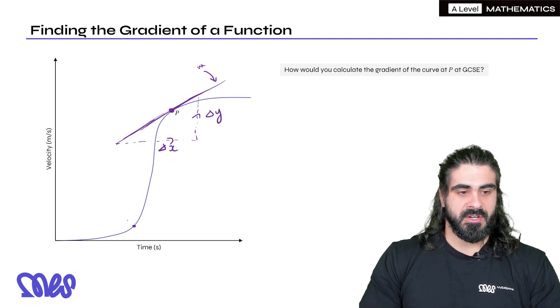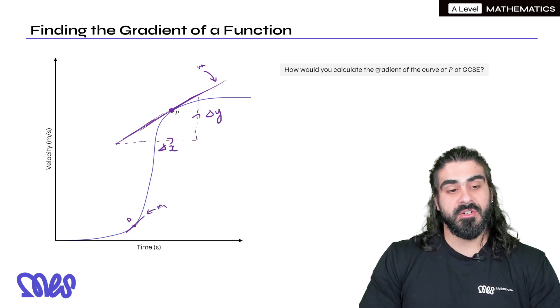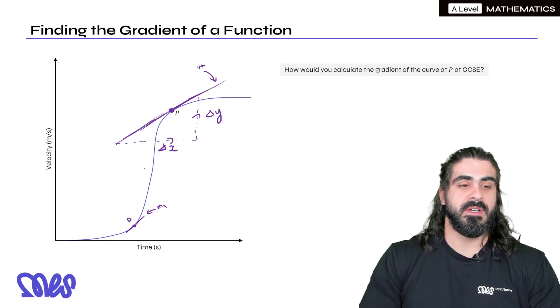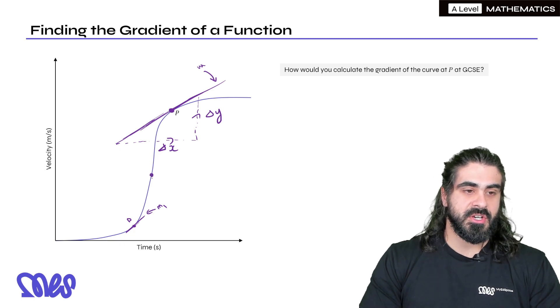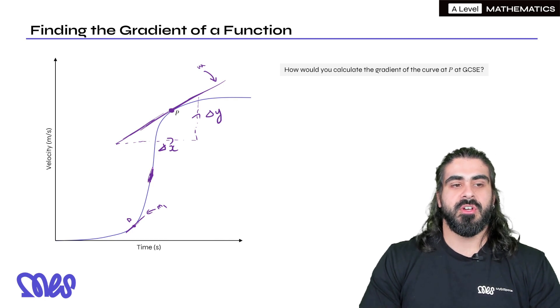If I changed P to over here, it would have been this kind of situation, and the gradient of this tangent would have been the same as the curve. If we did it here, you can see that the curve is a lot steeper, and the tangent is also much steeper, so it would have had a larger gradient.